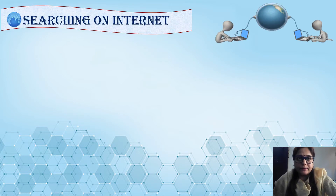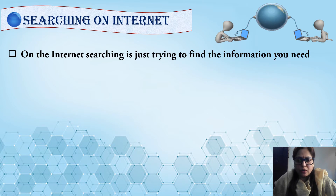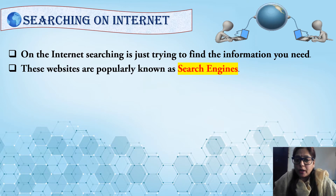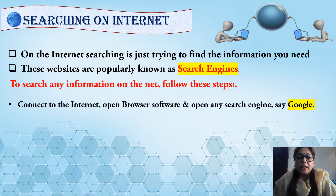Now our next topic is searching on the internet. What is searching? On the internet, searching is just trying to find the information you need — whatever information you want, you can search on the internet. There are certain websites on the internet that help us to search for websites containing particular information. These websites are popularly known as search engines. To search any information on the internet, you have to follow these steps. Step number one: connect to the internet, open browser software, and open any search engine, like Google.